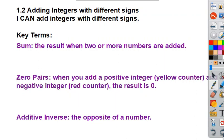What's up 7th and 8th grade students? This is Mrs. Talati and Mrs. Cervantes and together we are Mrs. Cervantes. We're rolling into 1.2, adding integers with different signs. Your essential understanding for today is: I can add integers with different signs.